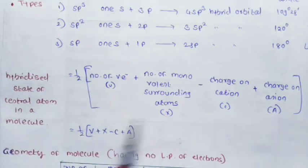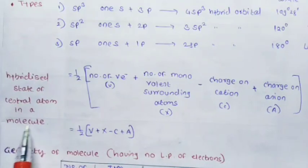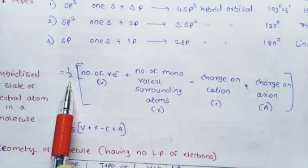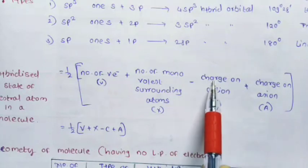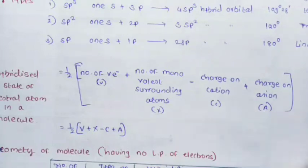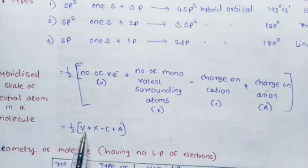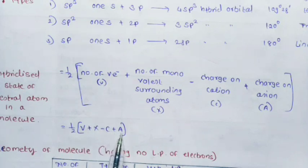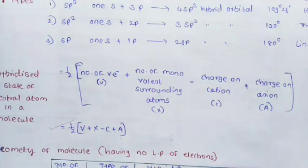To find the hybridization state of the central atom in a molecule, we use the formula: Hybridization state = one-half × (number of valence electrons + number of monovalent surrounding atoms − charge on cation + charge on anion). Using this formula, we can find out the hybridization of the central atom in a molecule.